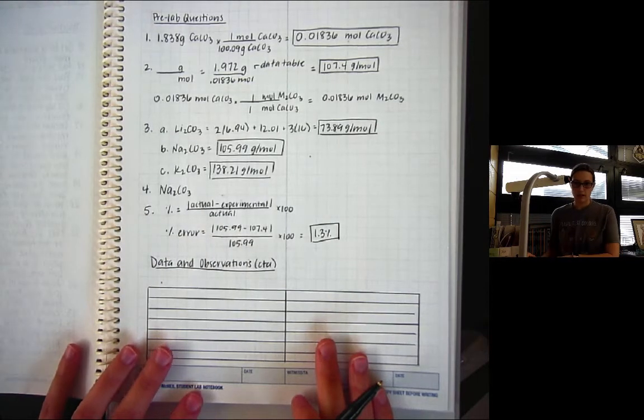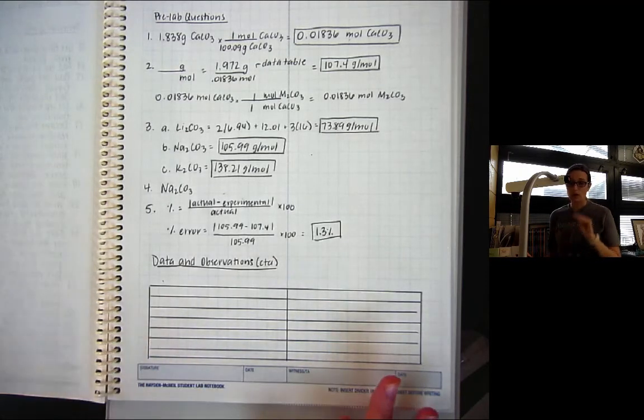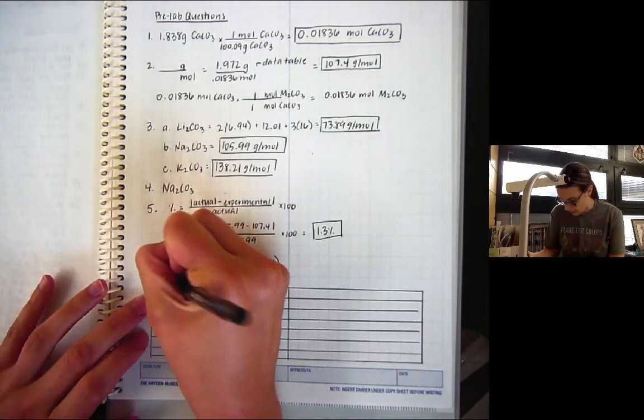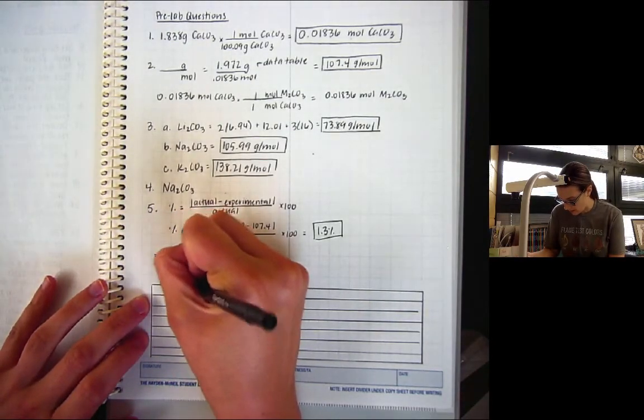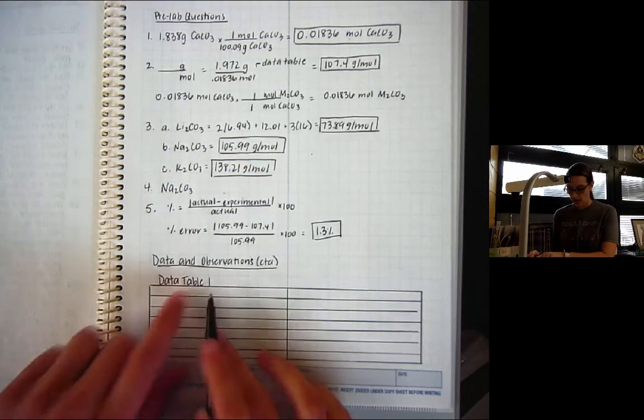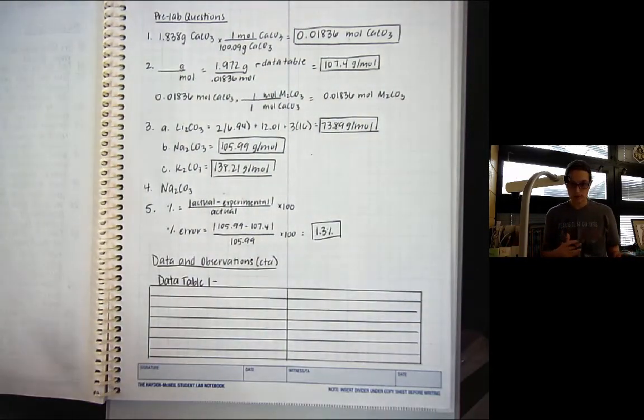One, you have to use a ruler. This looks much neater than not using a ruler. That's part of the rubric. Use a ruler or a straight edge. The second thing is to actually label your data table. So, I'm going to label it data table 1. It has to have a title like this, data table 1 with a number. And then give it just a quick title.